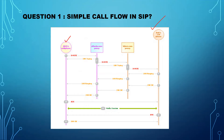Alice's soft phone is the User Agent Client (UAC) and Bob's IP phone is the User Agent Server (UAS). If these proxy servers are not there, then UAC sends an INVITE message to the UAS — the first INVITE from Alice's soft phone to Bob's IP phone. Then there will be a response: 100 Trying from Bob's IP phone to Alice's soft phone, from UAS to UAC. That is a provisional response, not a final response.